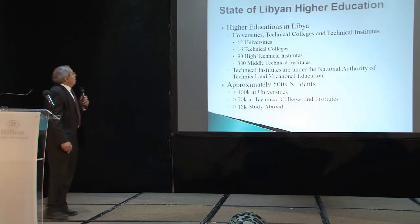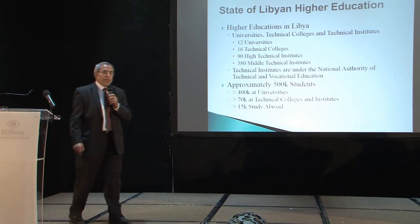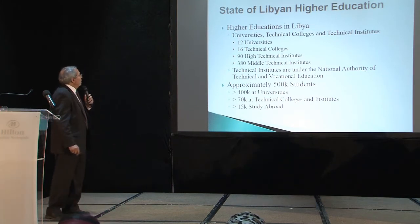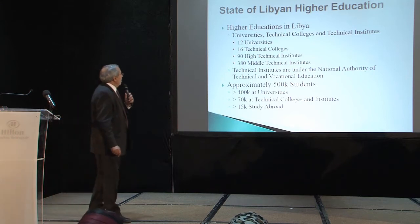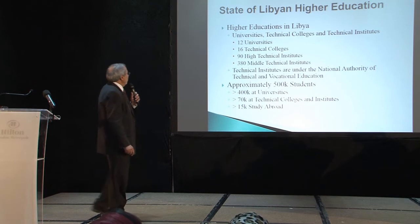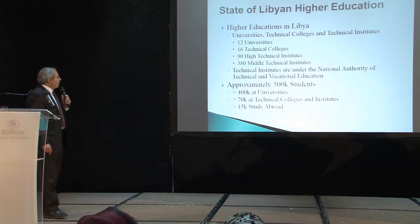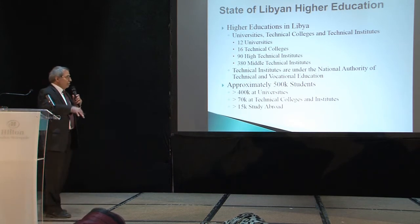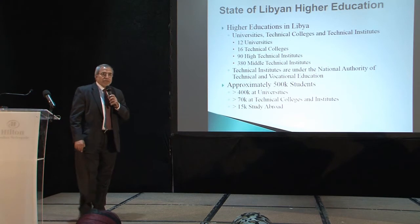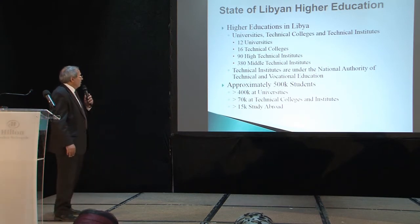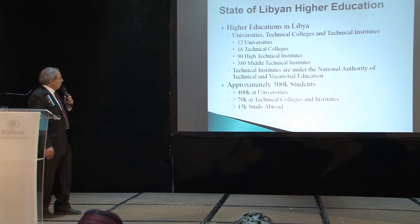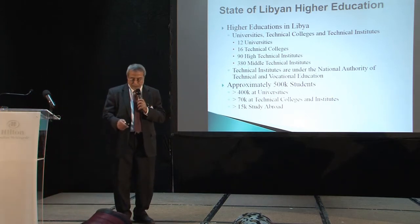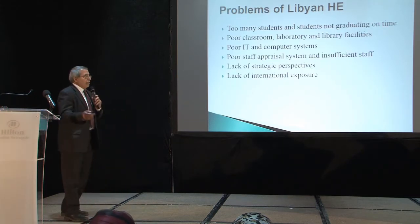To give you some stats about the state of higher education in Libya — these numbers might be a little outdated, maybe a year old or so. We have about 12 universities, 16 technical colleges, 90 high technical institutes, and about 380 middle technical institutes. There are roughly 500,000 students in the system, more than 400,000 at universities, over 70 or 80,000 in technical colleges and institutes, and roughly about 15,000 studying abroad.